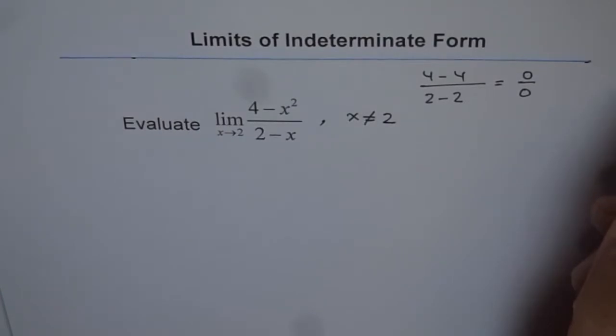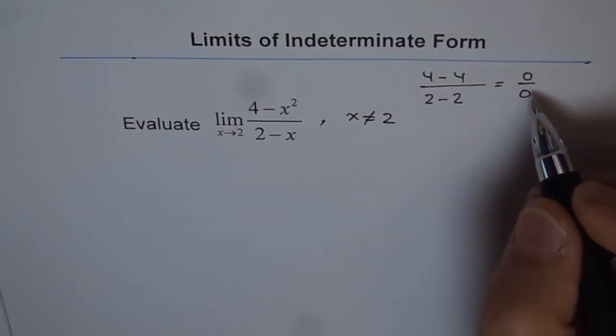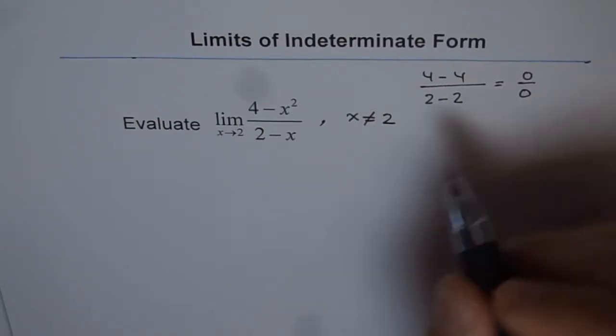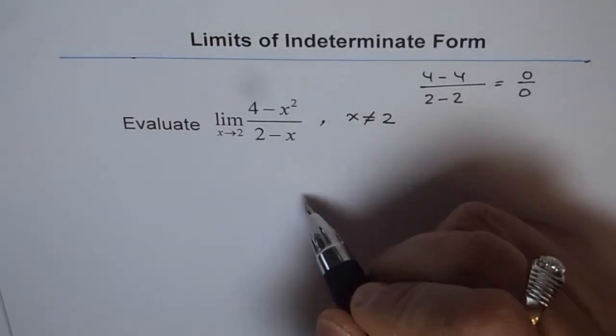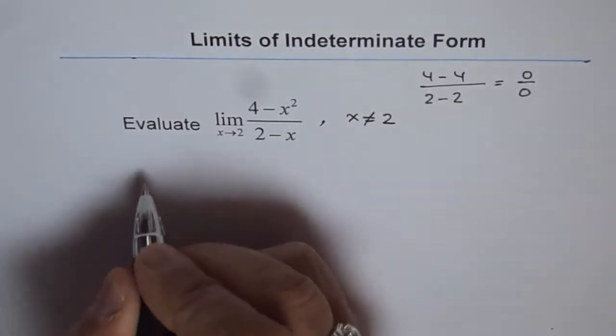Now to find the limit of such a function, we will adopt this strategy of factoring. As I said, x minus 2 is a factor here in the numerator. So we can factor it out.